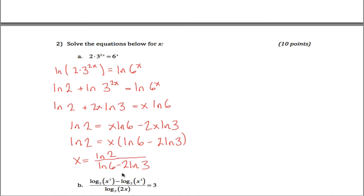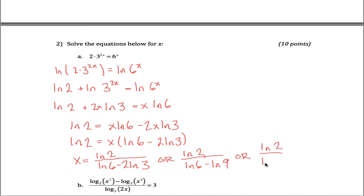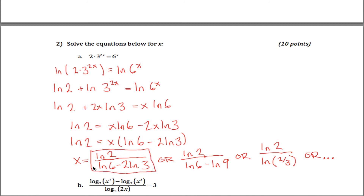There are lots of different ways to write this answer. You could bring the two up using log rule three to get natural log of two divided by natural log of six minus natural log of nine. Or you could apply the second log rule to make the denominator just the natural log of six divided by nine, which is two-thirds. You could apply the change of base formula or write it as log base two-thirds of two, though typically we avoid bases less than one. Any of these are totally fine.